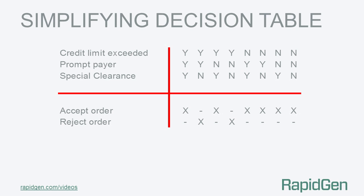This limited entry decision table is to decide whether to accept or reject a customer's order. There are three conditions: has the customer's credit limit been exceeded, are they a prompt payer, and do they have special clearance? The associated action, depending on the combination of the conditions, is to either accept the order or to reject it.